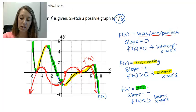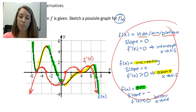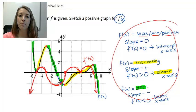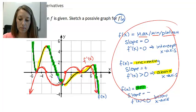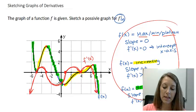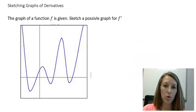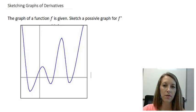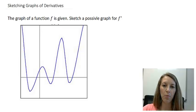To summarize: maxima, minima, and plateaus intercept the x-axis on the derivative graph. Any time the original function is increasing, the derivative goes above the x-axis. Any time it's decreasing, the derivative graph is below the x-axis. Now here's another example. The blue graph is our original function, and we want to sketch the graph of the derivative. I suggest you pause the video and try to come up with a sketch on your own, then see if it matches what I come up with.